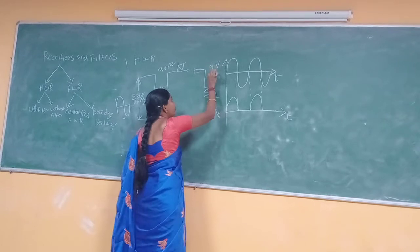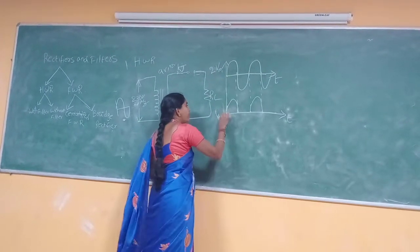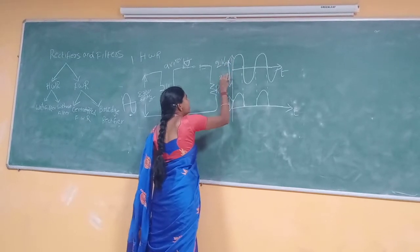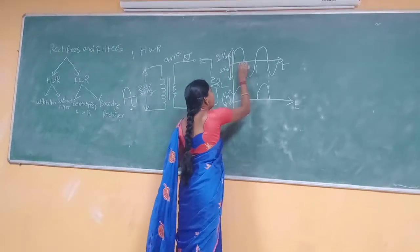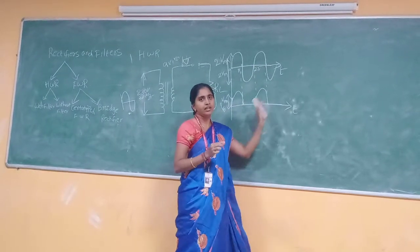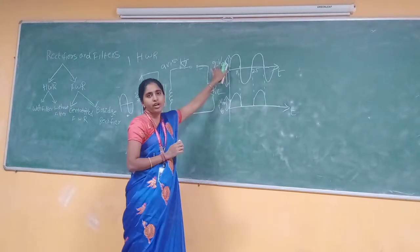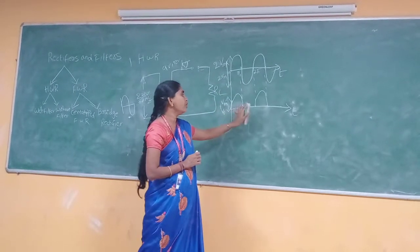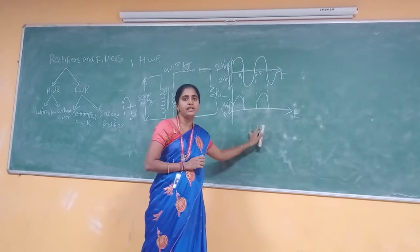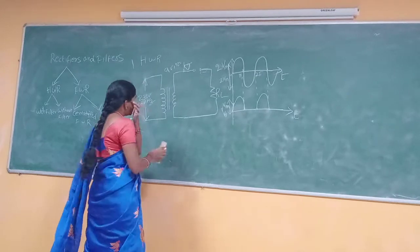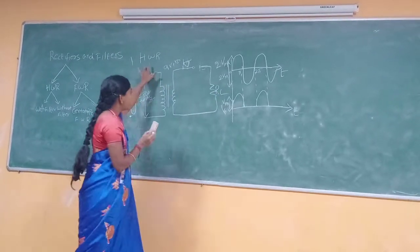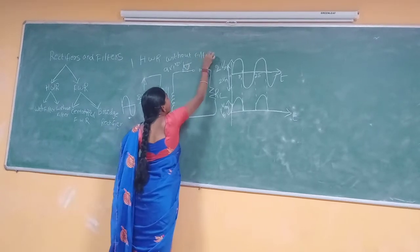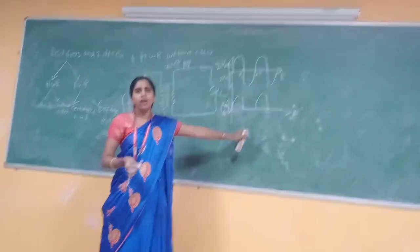For example, if you are applying a signal as input, the time period from here to here — let's say 0.5 — this is the time period of the particular signal. Whatever input you are applying, that will be divided into half cycles, so you are getting only half cycle of the pulse signal by using the half-wave rectifier. This is the half-wave rectifier without filter. When you are not using a filter, you are getting the output like this.